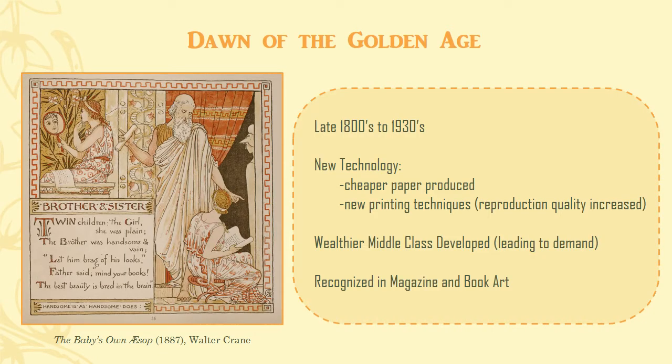The Golden Age began in the late 19th century and is described as a time of unprecedented excellence in book and magazine illustration until the late 1920s or early 1930s. The development of high-speed presses, inexpensive pulp-based paper, and improved reproductive processes allowed artists to produce and export higher quality images faster with greater color range and accuracy.